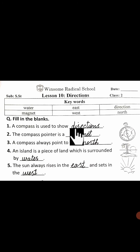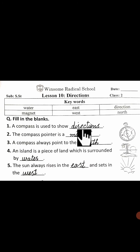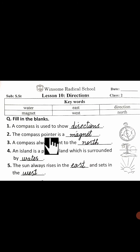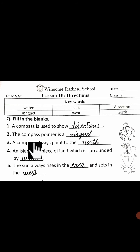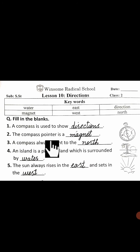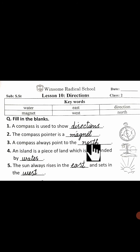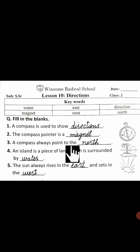Number one: A compass is used to show directions. Compass kis liye use hota hai? Directions ko show karne ke liye. Number two: The compass pointer is a magnet. Number three: A compass always points to the north.